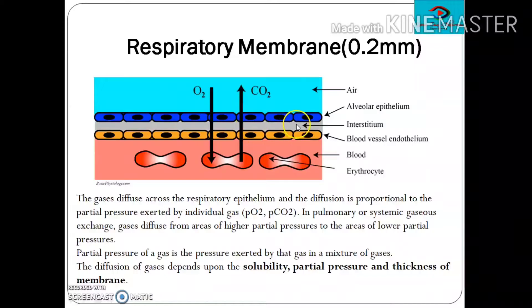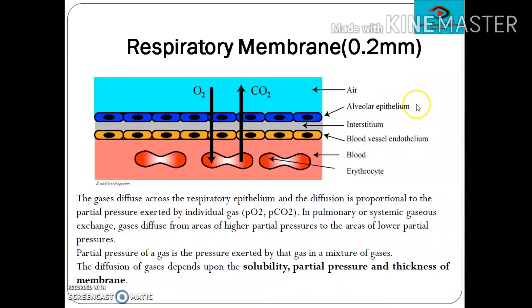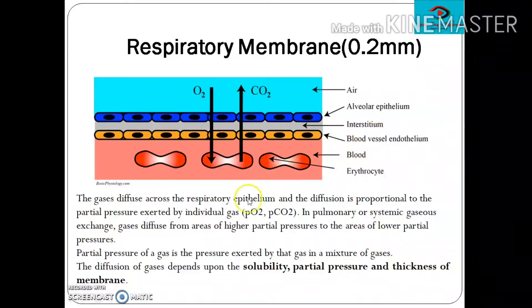So there are three things in between the alveolar epithelium and blood vessel endothelium: the basement membrane of the alveolar epithelium, the interstitium, and the basement membrane of the blood vessel endothelium — together referred to as basement substance. Despite having these five different components — alveolar epithelium, basement substance, and blood vessel endothelium — the thickness of the respiratory membrane is hardly 0.2 mm.